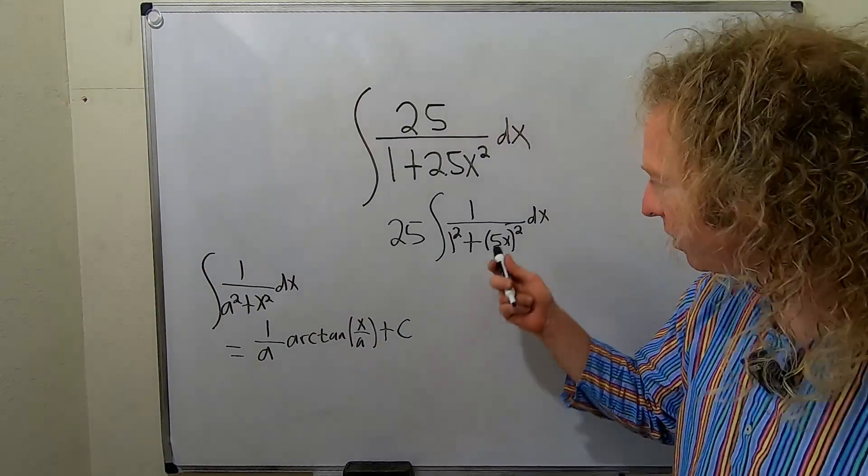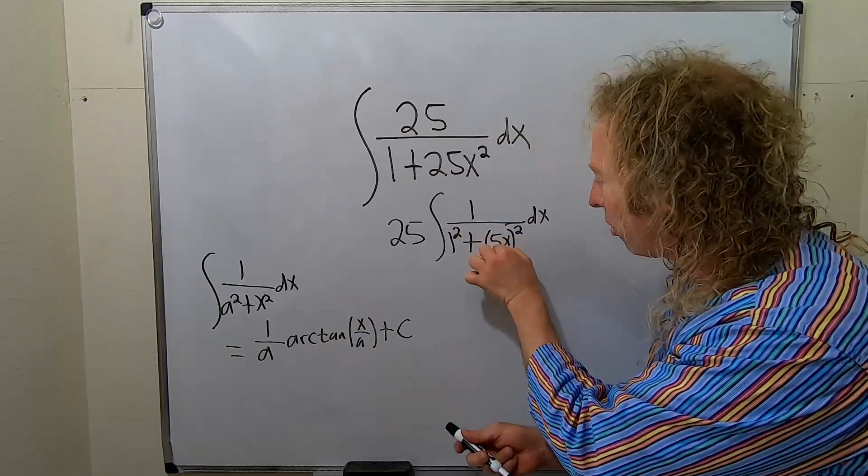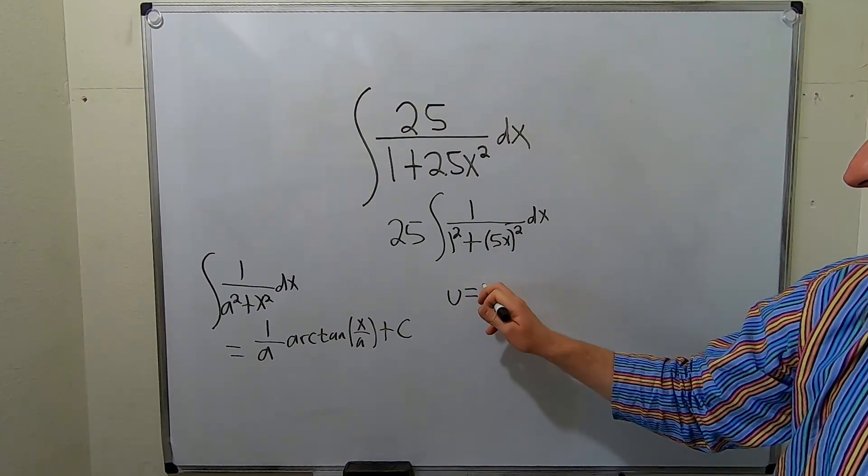So now what we'll do is we'll make a u substitution because this has to be one thing. See here, it's just x. So we're going to call this piece u. So we'll let u be equal to 5x.